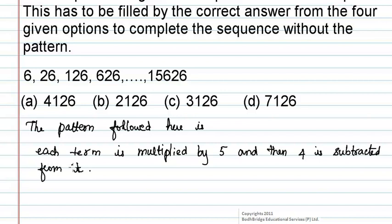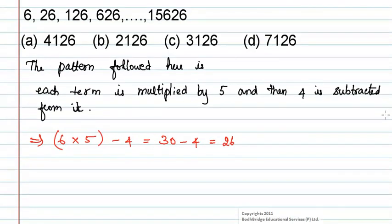Now, let us consider the first term. 6 is multiplied by 5 and 4 is subtracted from it. We will get 30 minus 4 which is equal to 26 and 26 is the second term.